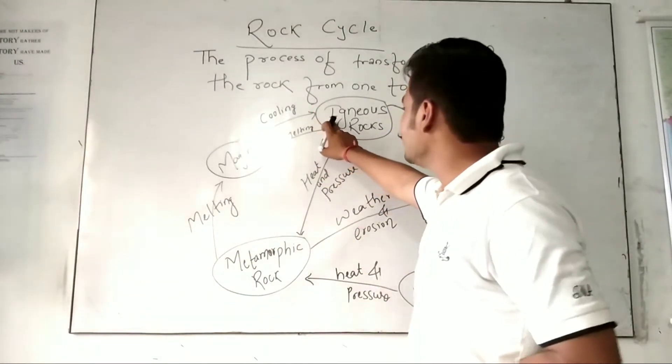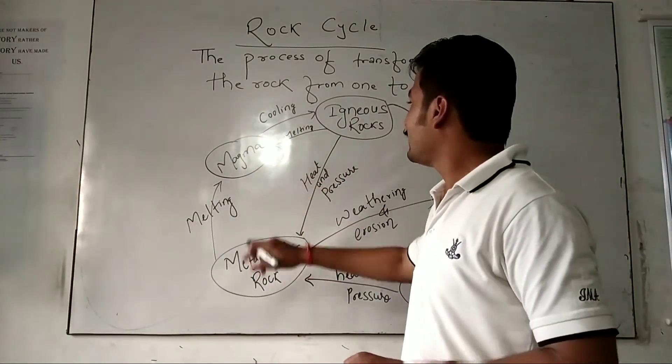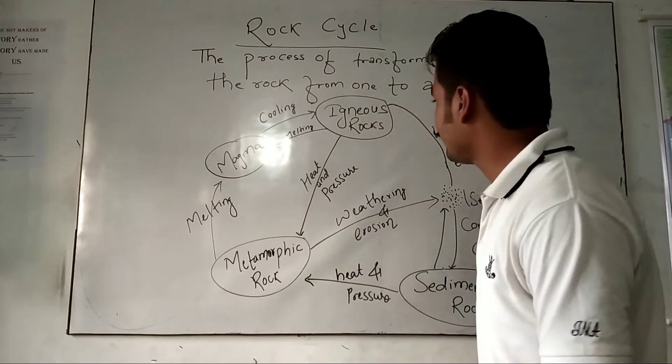The rock so formed is known as igneous rock. If igneous rock melts, it forms into magma, and if magma cools, igneous rocks are formed.